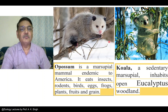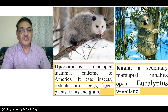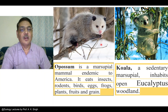In this picture, two animals are shown. The left side animal is opossum. It is a marsupial mammal and it is endemic to America, particularly North America. This animal feeds on a variety of things like insects, rodents, birds, eggs, frogs, plants, fruits, and grains. This means it is omnivorous — it feeds on plant materials as well as on different types of animals. And it has wide distribution.